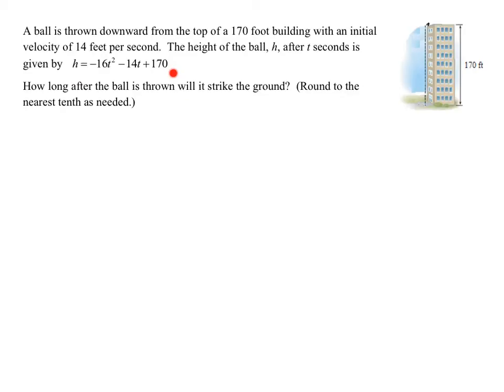So they're nice. They've given us the equation. We need to find how long after the ball is thrown will it strike the ground, and it says round to the nearest tenth as needed. So what we have to do is how long does it take to go from up here down to here? What is the height of the ball above the ground when it hits the ground? Well, hopefully you can see that at this point, h is going to equal zero. So all we have to do is plug in h equals zero and solve the resulting equation.